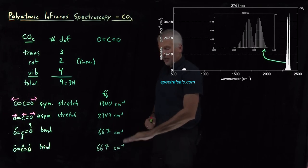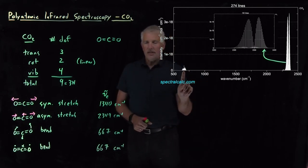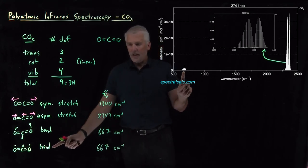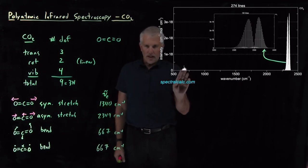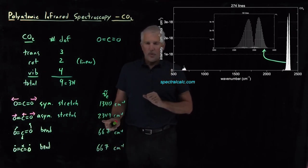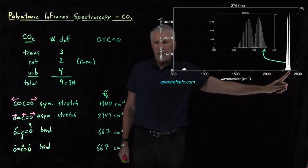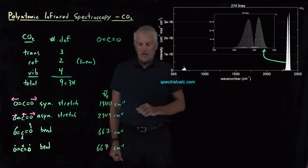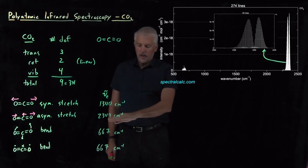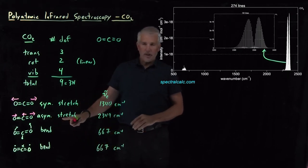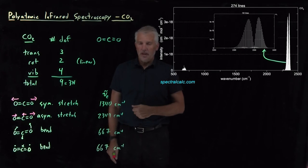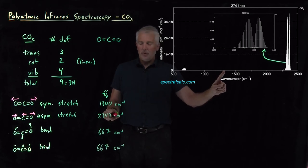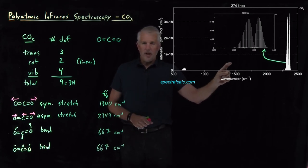One answer is because two are degenerate. The peak centered near 667 wave numbers represents both CO2 bending motions — those two excitation energies are identical, so they are layered directly on top of each other. At 2349 wave numbers, that's the band representing the asymmetric stretch, with ro-vibrational energies for transitions involving the asymmetric stretch plus or minus some amounts of rotational energy. The only mystery then is: where is the band at 1340 wave numbers? Why do we not see absorption there?